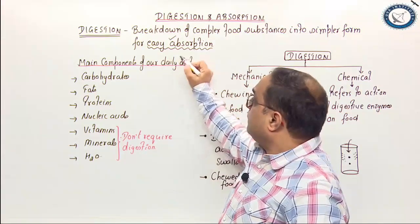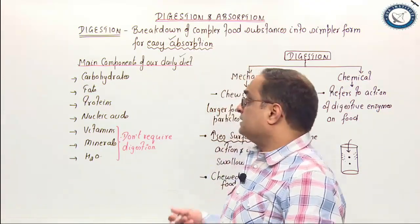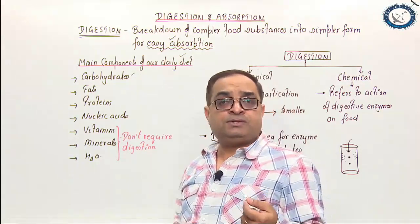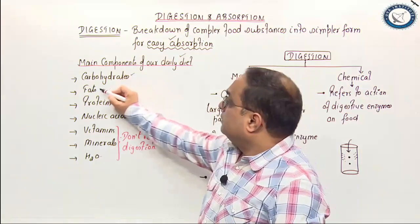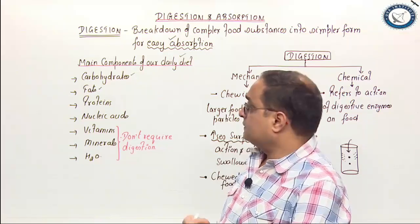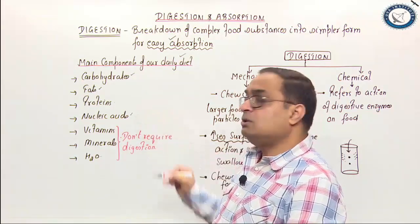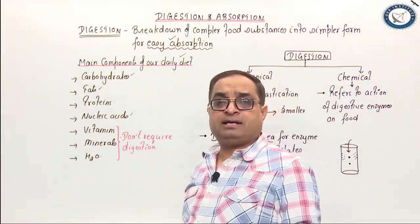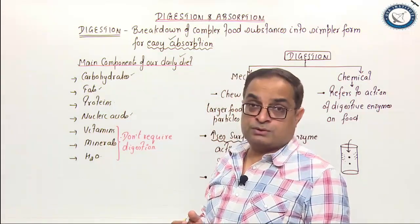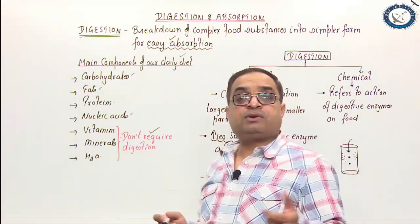Let us see the main components of our daily diet. Food includes carbohydrates — for example, bread contains starch. Your food also includes fats, and the main dietary fats are triglycerides. You eat proteins of plant or animal origin. Nucleic acids also form a minor component of our daily diet. In addition to these four, our diet includes vitamins, minerals, and water. However, vitamins, minerals, and water do not require digestion.